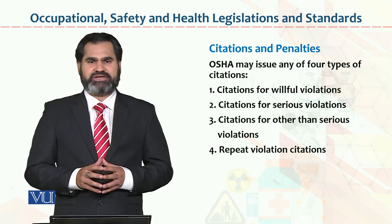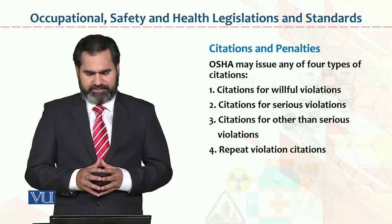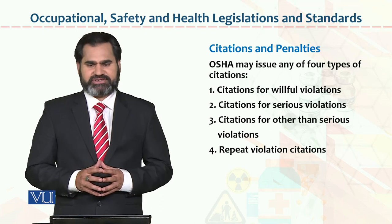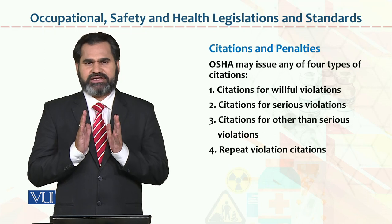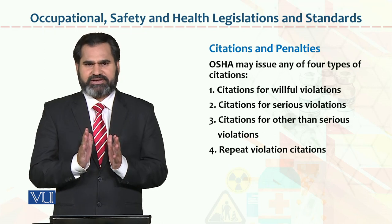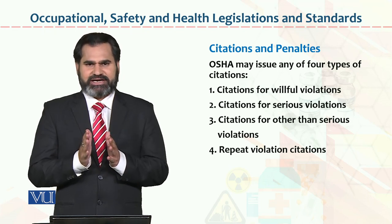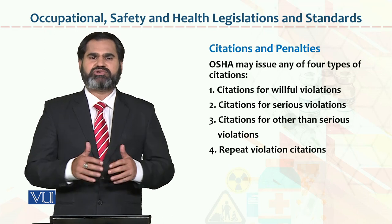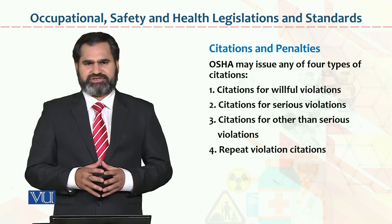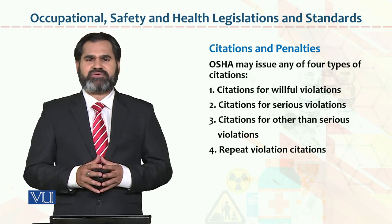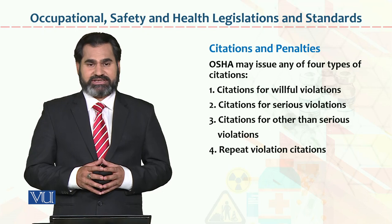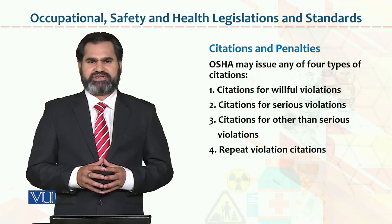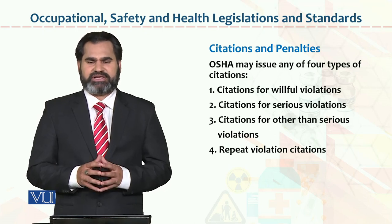Other than serious violation — there can also be violations other than serious ones. And the last type is repeat violation citations. If you committed a violation once, and then intentionally repeated it again and again, meaning you are now accustomed to committing that violation — these are the four types of violations on which OSHA can issue its report.